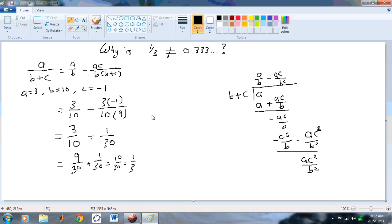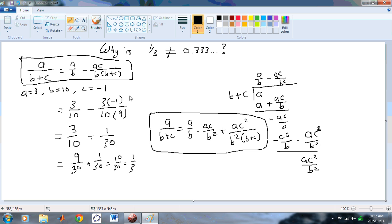So we could stop here now and say, well, A over B plus C is equal to this: A over B minus AC over B squared plus AC squared over B squared times B plus C. So now we have a new representation. This was the first one, and this is the next one.